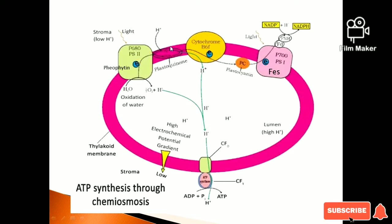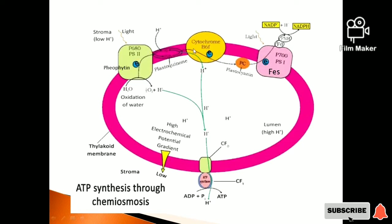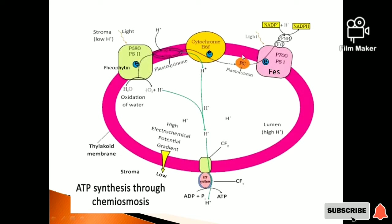This is Plastoquinone, a mobile carrier in the thylakoid membrane — it is not part of Photosystem II itself. Next is the Cytochrome B&F complex. After that is Plastocyanin, another mobile carrier, which is blue in color because it contains copper.